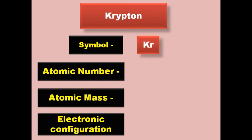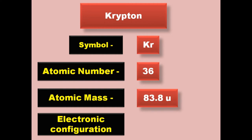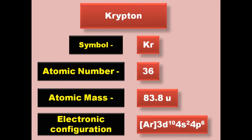Krypton has symbol Kr, atomic number 36, atomic mass 83.8, electronic configuration [Ar] 3d10 4s2 4p6. Krypton is a noble gas and exists in gaseous form at room temperature.